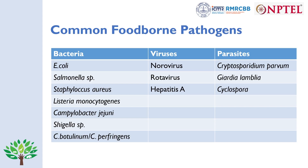Common foodborne pathogens involved in food-related illnesses are of three types. Bacteria include E. coli, Salmonella, Staphylococcus, Listeria, Campylobacter, Shigella, and Clostridium. Viruses include norovirus, rotavirus, and hepatitis A. Parasites include Cryptosporidium, Giardia, and Cyclospora.